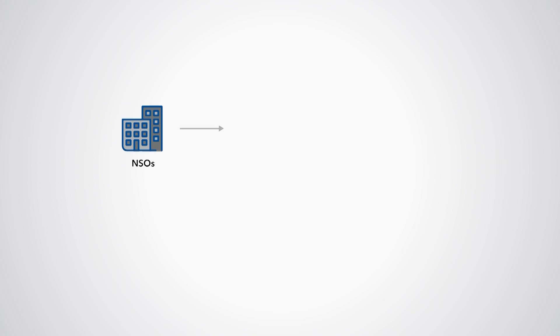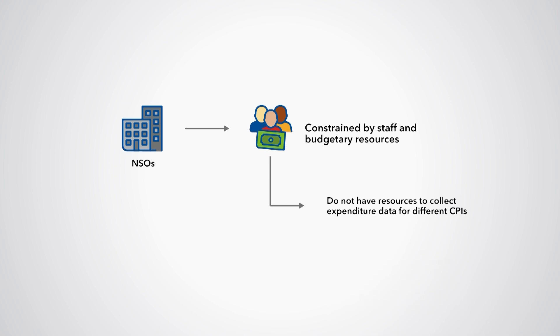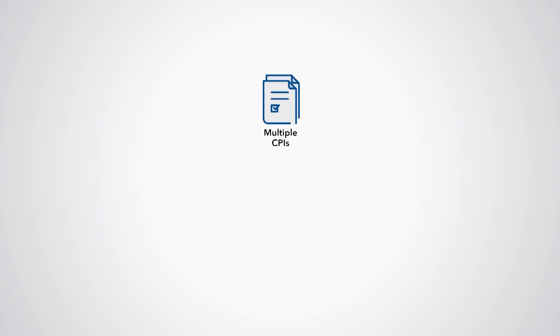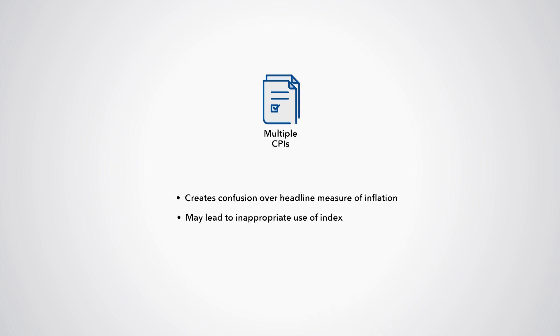Is this feasible? Let's investigate these practicalities. It is not practical to compile separate CPIs for each use. First, NSOs are constrained by staff and budgetary resources. NSOs do not have the resources to collect the expenditure data needed to compile different CPIs, nor do they have the resources to collect, compile, and disseminate multiple indexes. Second, the dissemination of multiple CPIs would create confusion among users. Users would be confused over what is the headline measure of inflation. Users may be inclined to use an index that is not appropriate for their use, but has a more favorable rate of change.